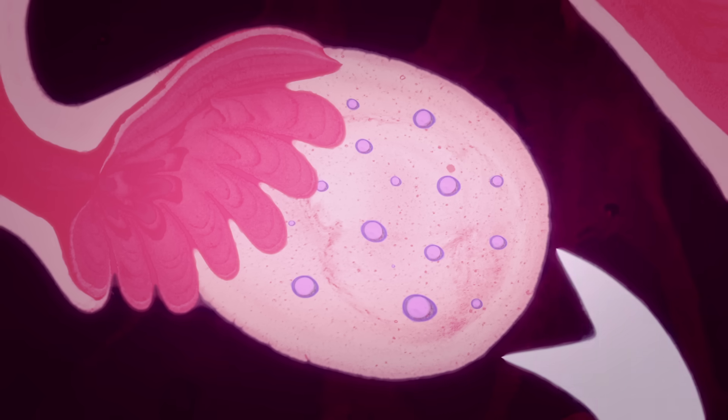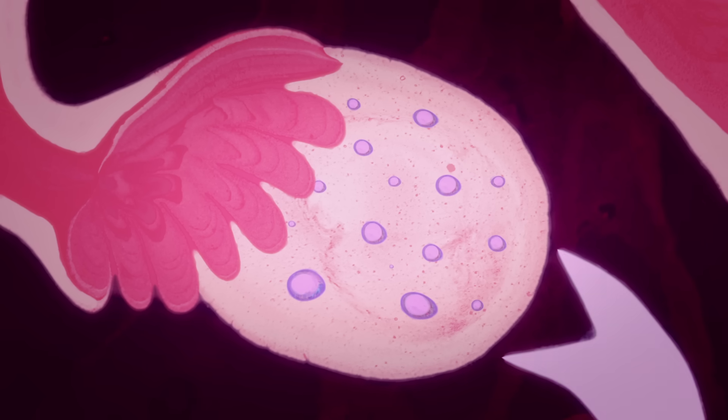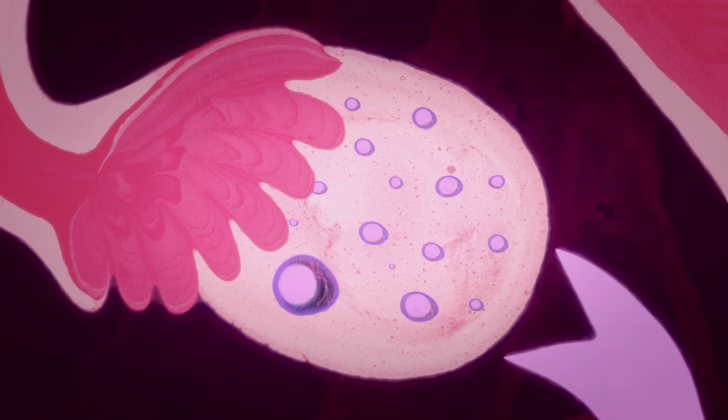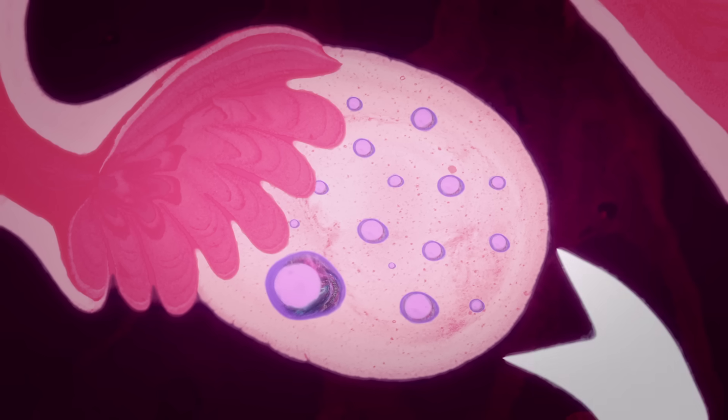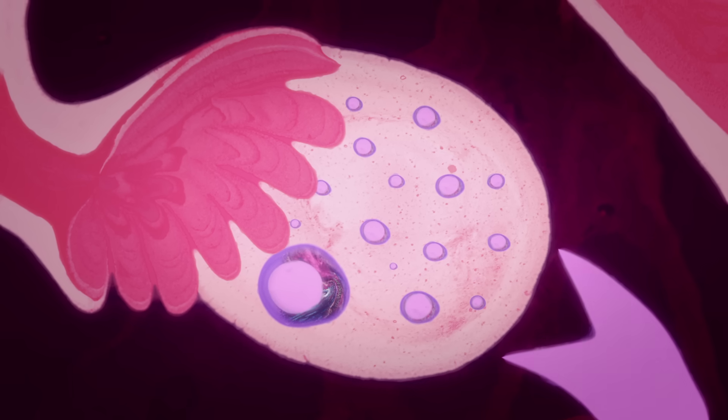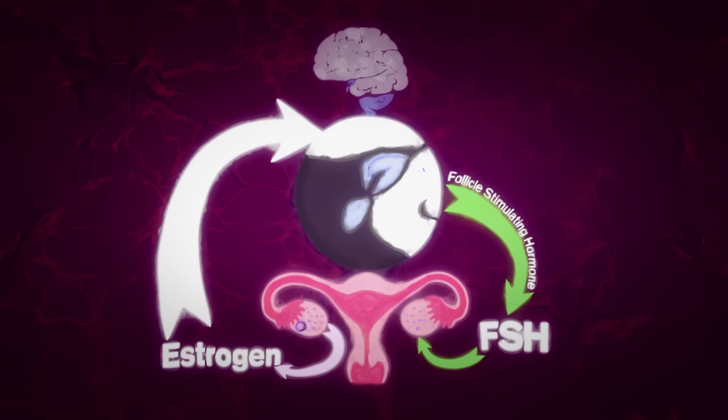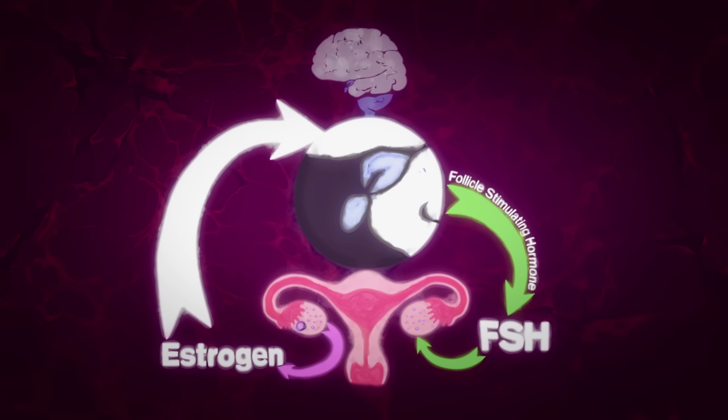Each follicle contains one egg, and on average, only one follicle becomes fully mature. As it grows and continues to release estrogen, this hormone not only helps coordinate growth and preparation of the uterus, it also communicates to the brain how well the follicle is developing.